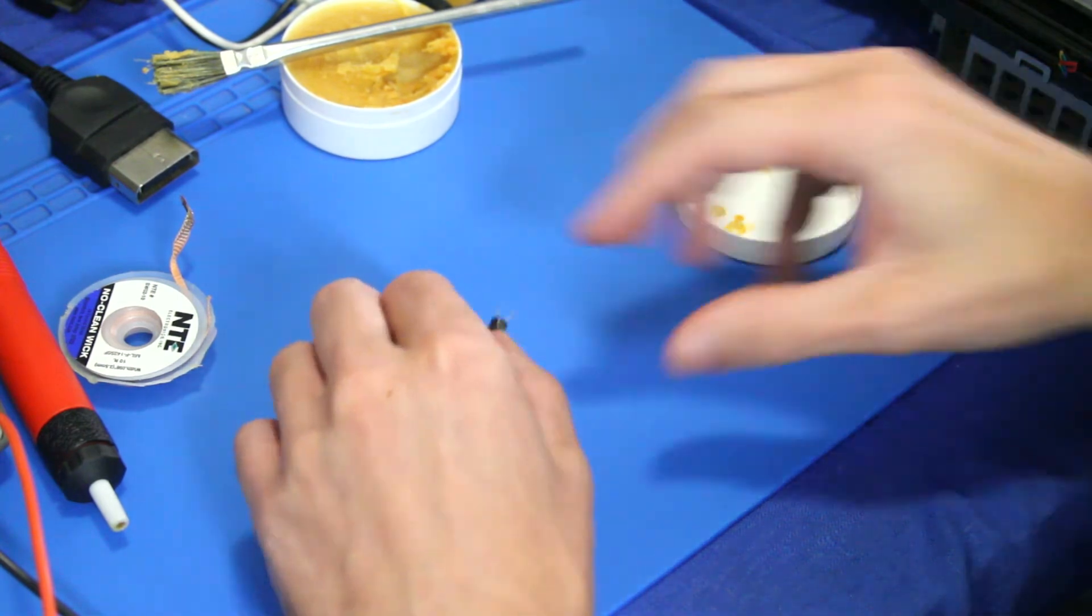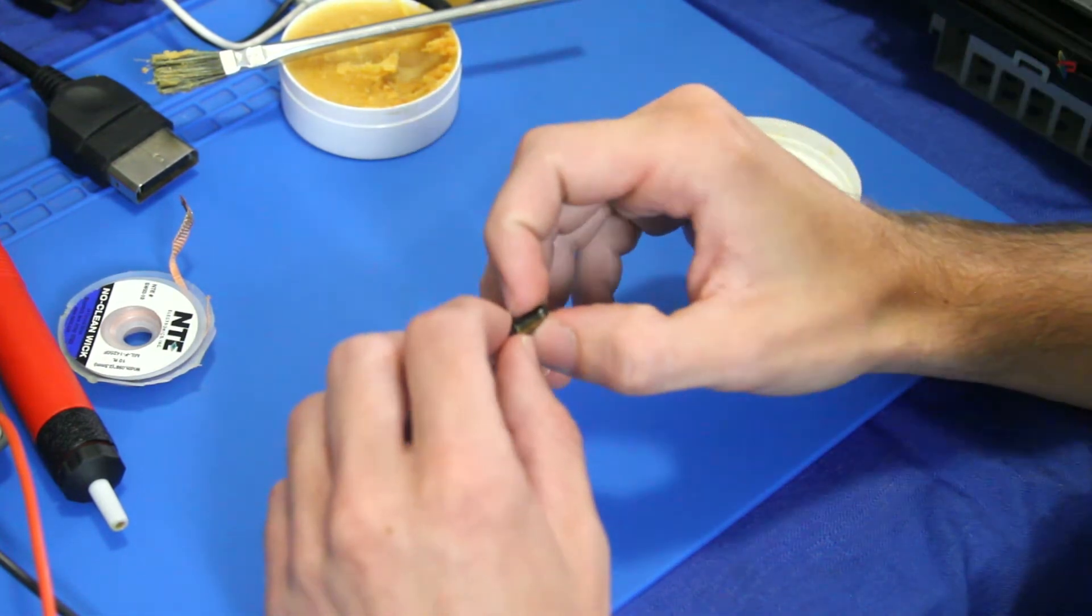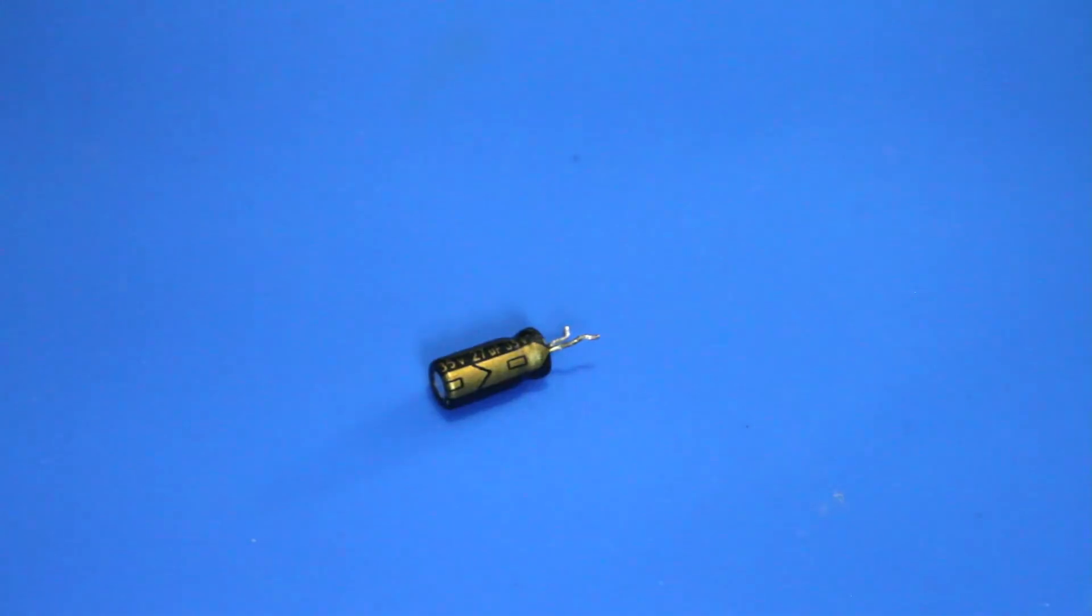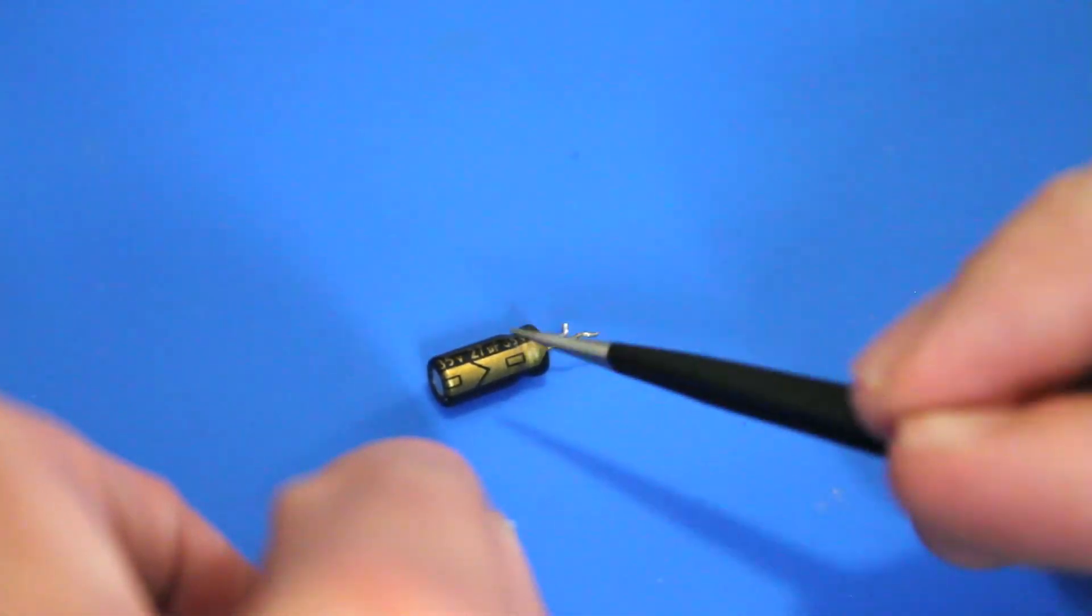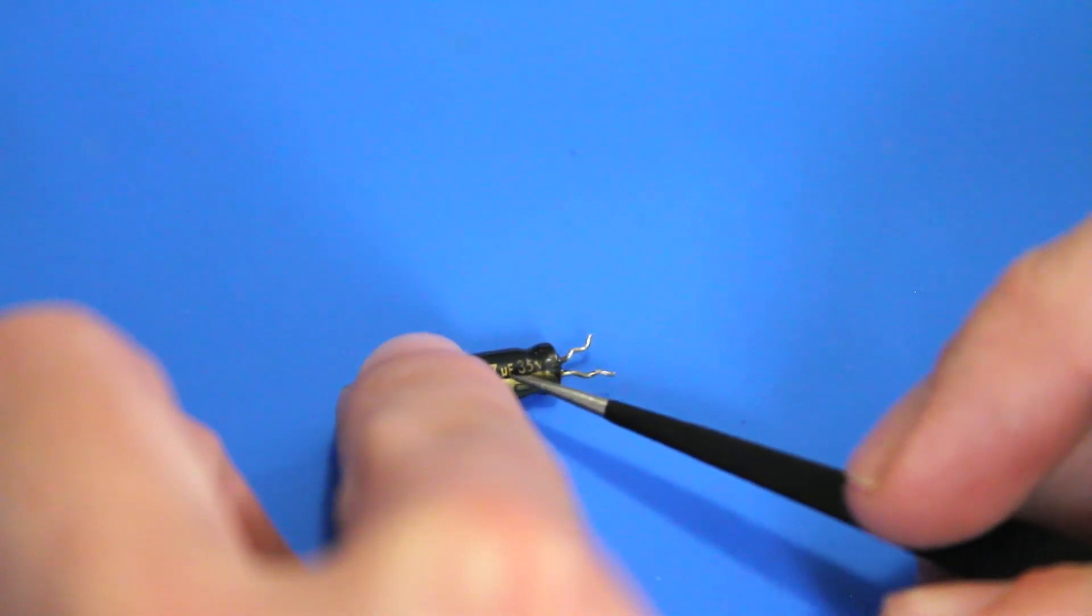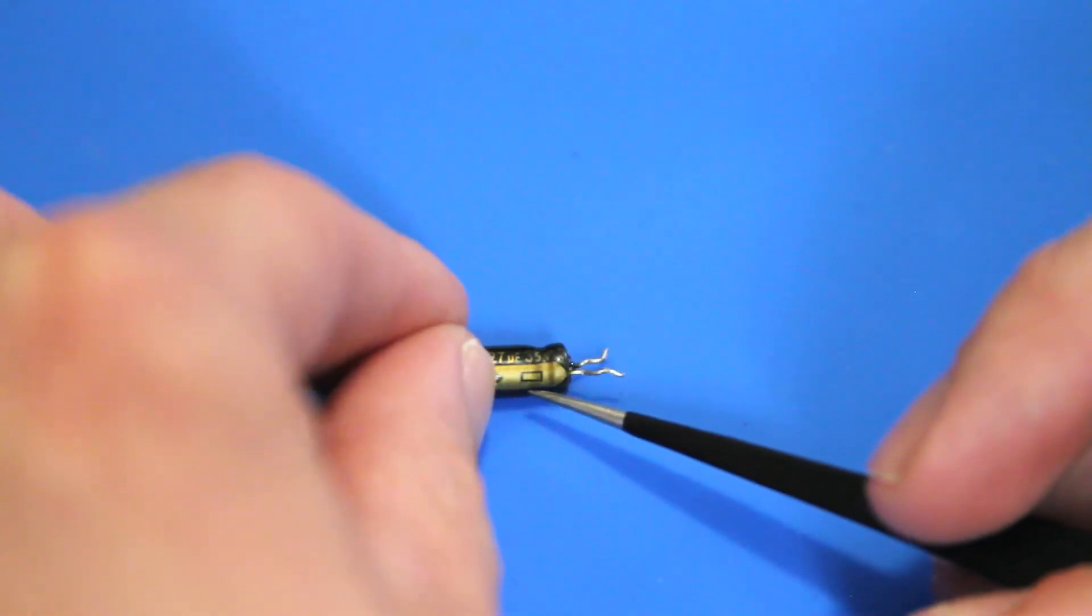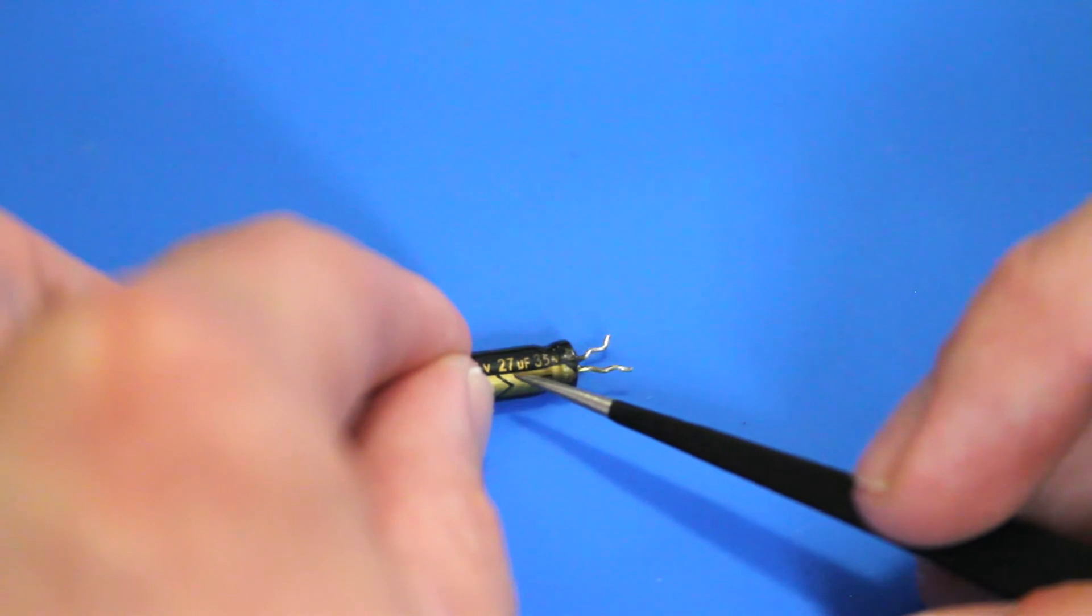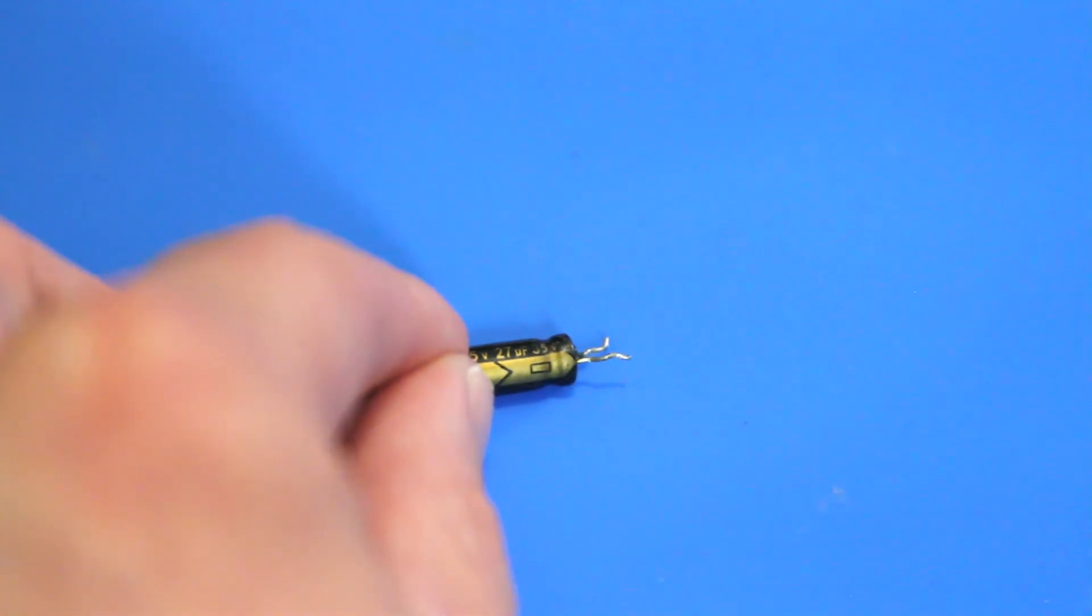Set that to the side and then we got to check the values on it. So the values, I'm going to try to point this out best I can. To find the value of what you got to test, you have to look for something with an F on it. So this is microfarad, it says 27 microfarads. So when we test this we're going to be looking for generally around this number. Hopefully that all came up on camera.